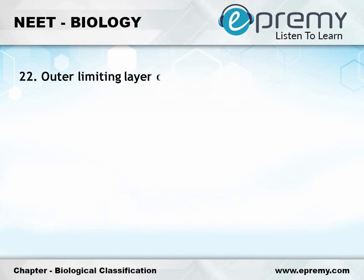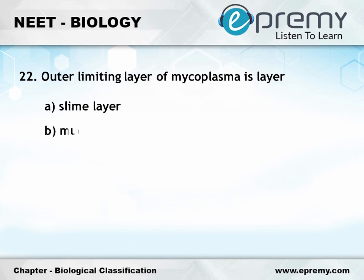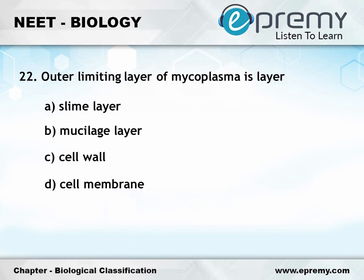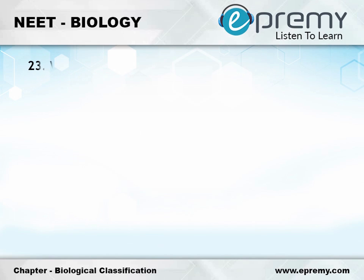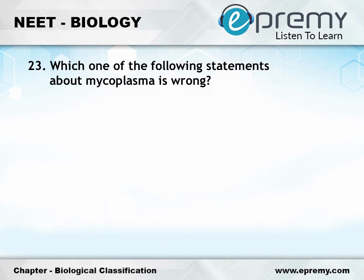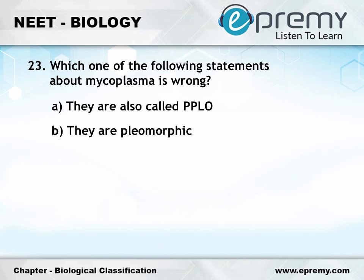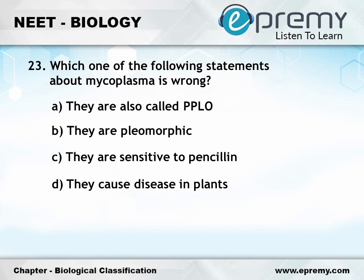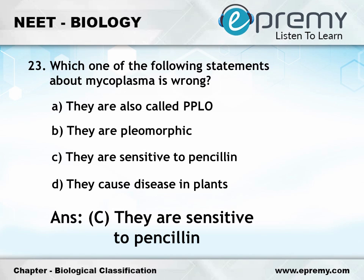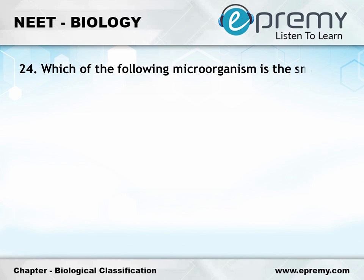Question number 22: The outer limiting layer of mycoplasma is — Option A: slime layer; Option B: mucilage layer; Option C: cell wall; Option D: cell membrane. The answer is Option D, cell membrane. Question number 23: Which one of the following statements about mycoplasma is wrong? Option A: they are also called PPLO; Option B: they are pleomorphic; Option C: they are sensitive to penicillin; Option D: they cause disease in plants. The answer is Option C, they are sensitive to penicillin.